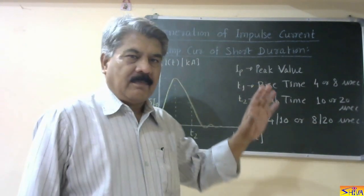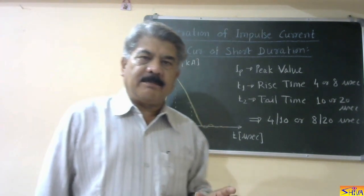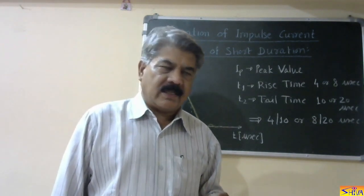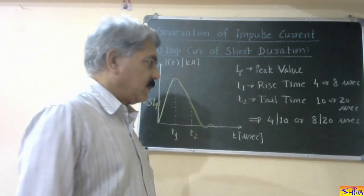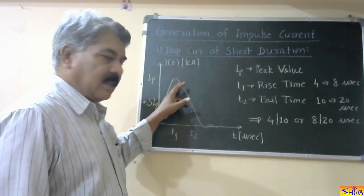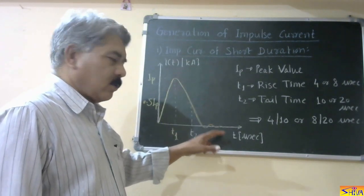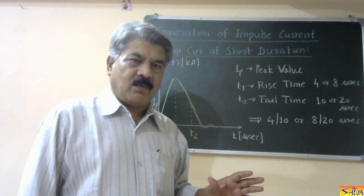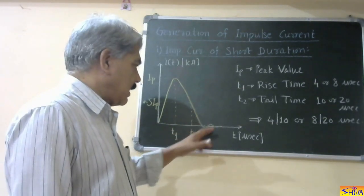When generating impulse current, there are two types: number one, impulse current of short duration, and number two, impulse current of long duration, which is of square wave or rectangular nature. For the short duration type, the shape has a fast rise and relatively slow decay. It is of damped oscillatory nature because it is not possible to generate impulse current just like impulse voltage — the impulse current is generated with damped oscillatory nature.